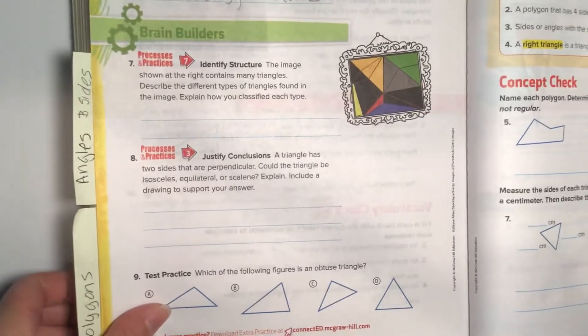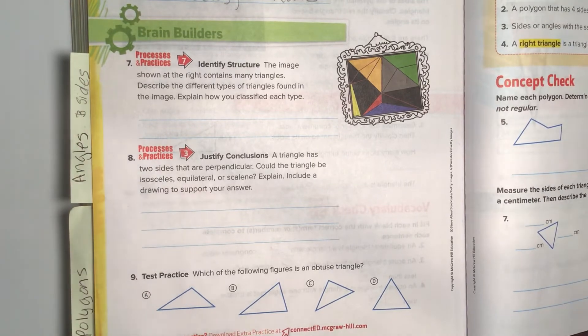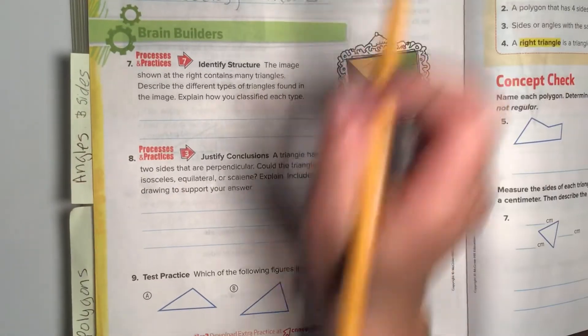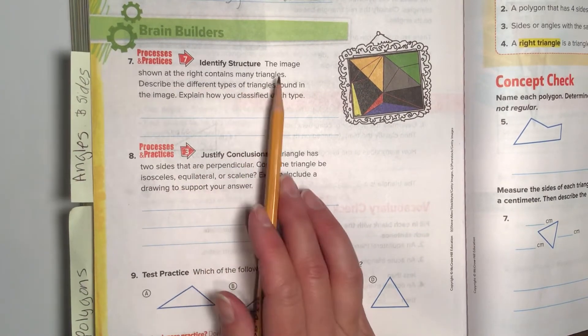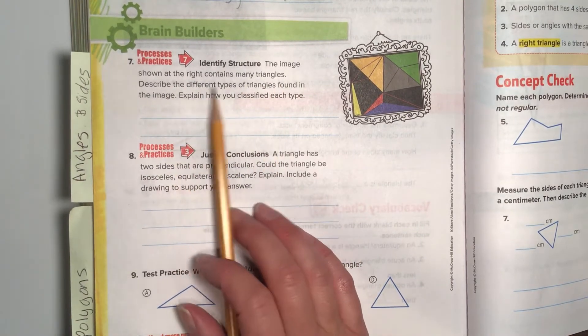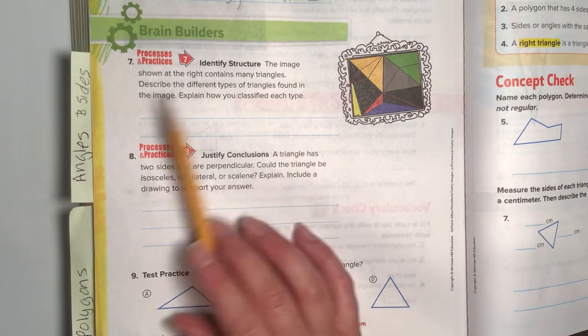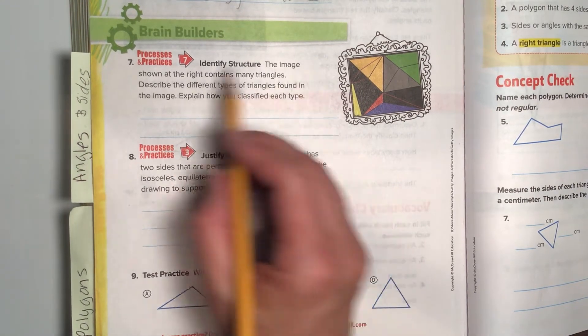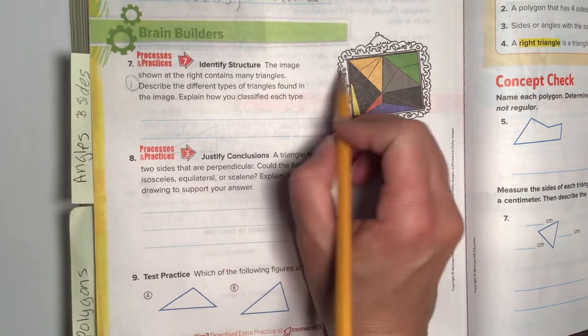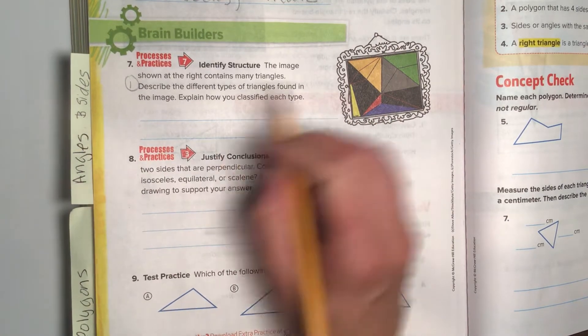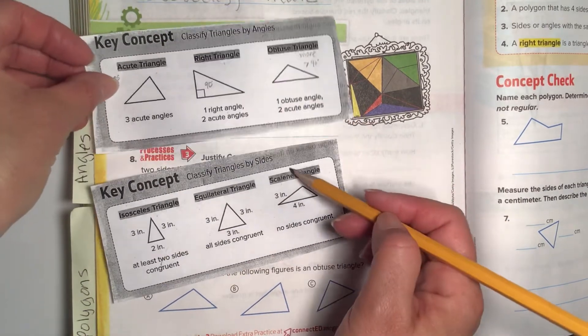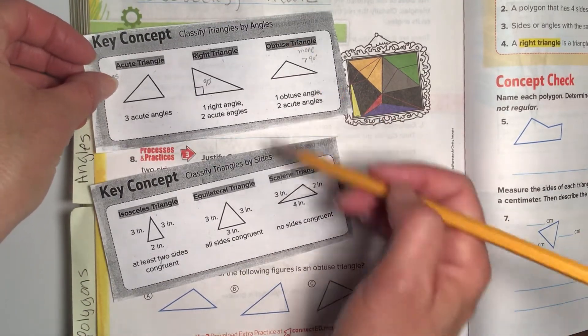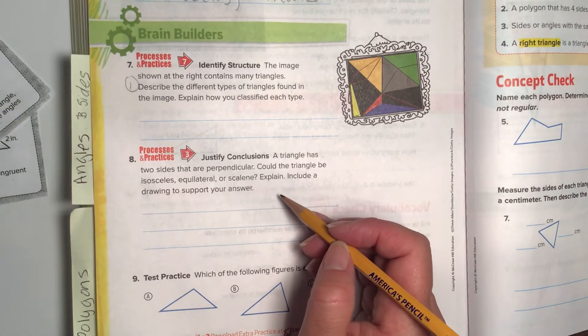Number six. Okay, let's dive into this brain builder. We can do it, right guys. Here we go. The image shown at the right contains many triangles. Describe the different types of triangles found in this image. So describe, explain how you classify each type. Well, we know that we can classify each type by sides and angles. So let's see what we can find.